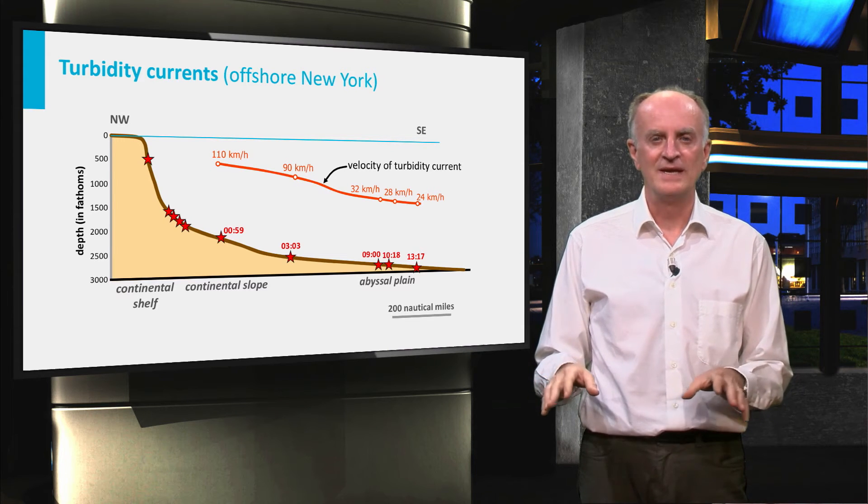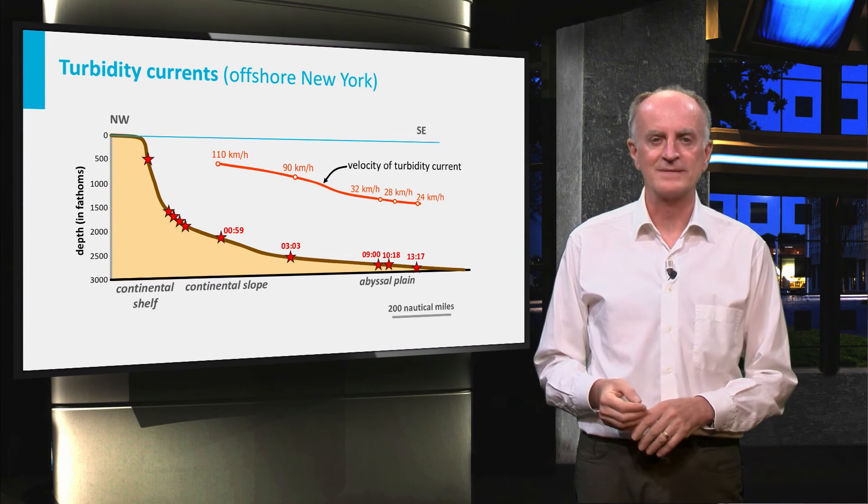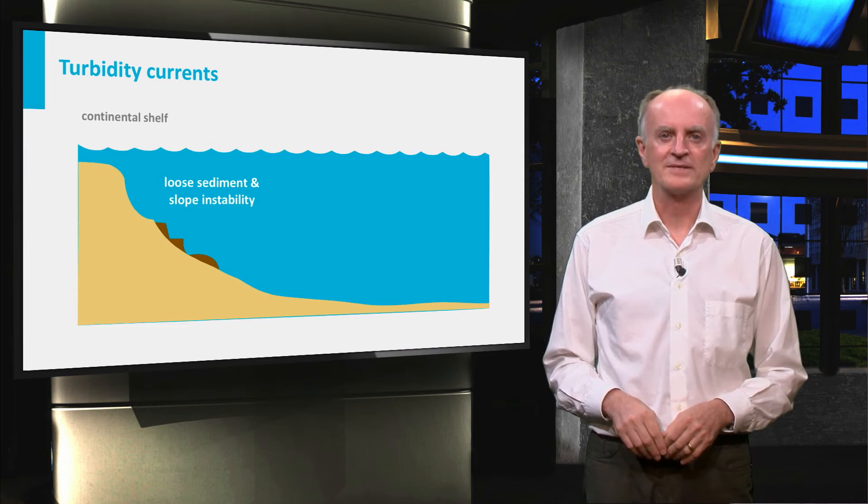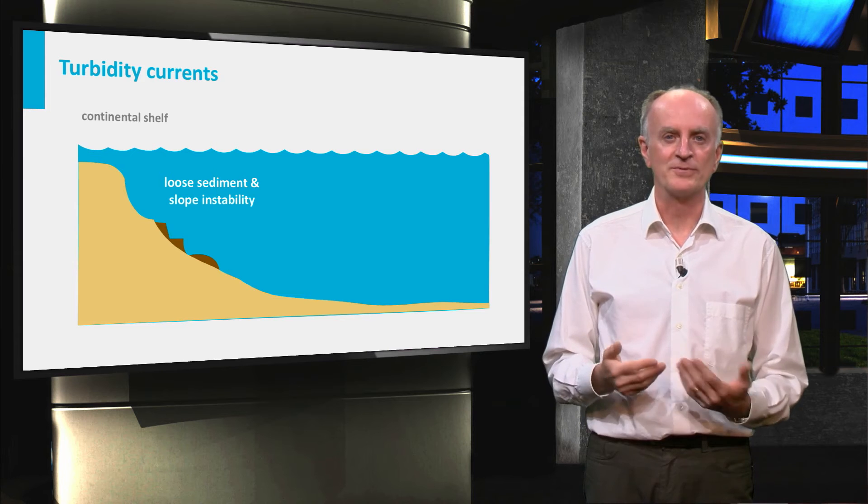Seafloor images have then shown that the current was associated with the deposition of large amounts of sediments. The currents responsible for the New York failures and transporting sediments from the continental shelf to the deep basin are called turbidites.